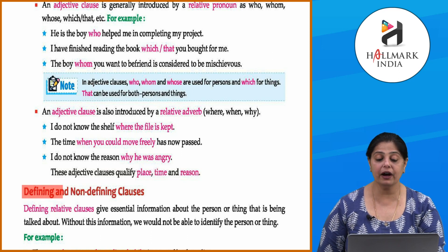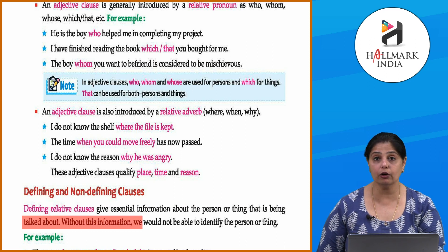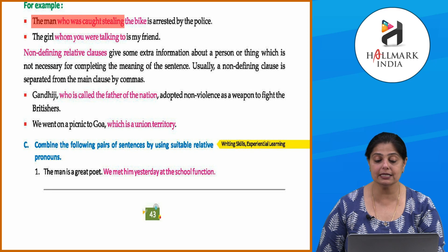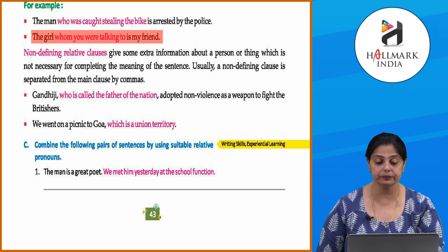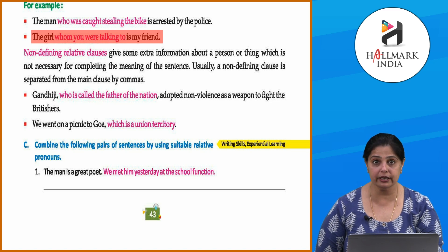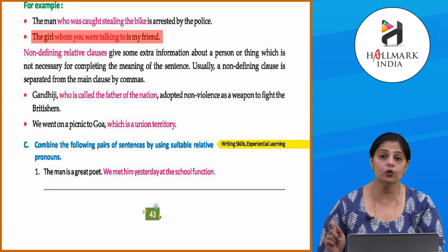'I do not know the shelf where the file is kept.' 'The time when you could move freely has now passed.' 'I do not know the reason why he was angry.' These adjective clauses qualify place, time, and reason. Now, defining relative clauses give essential information about the person or thing being talked about — without this information we cannot identify who or what is meant. For example: 'The man who was caught stealing the bike' and 'The girl whom you were talking to is my friend.'